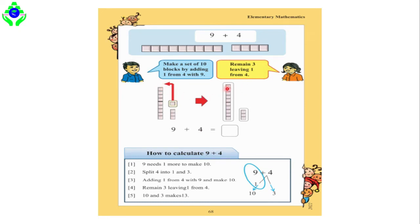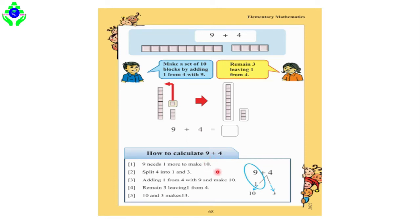After adding 1 to 9, we get 10 boxes — that is step 3. Step 4 is: 3 remains after leaving 1 from 4. Whenever you add that 1 to 9, there are 3 boxes still available. Then our final step is: 10 and 3 makes 13. So 10 plus 3 equals 13, which means 9 plus 4 equals 13.